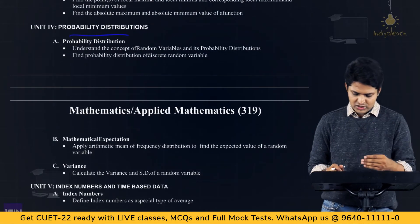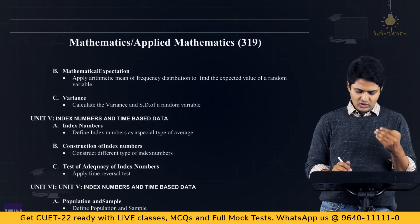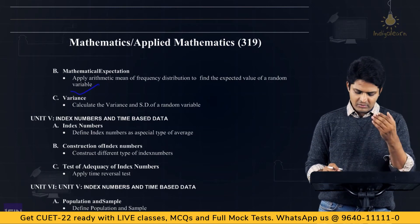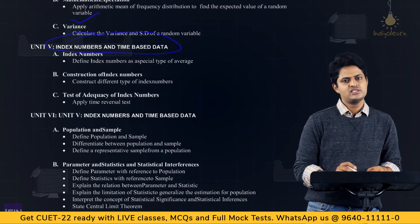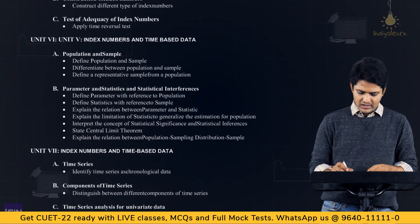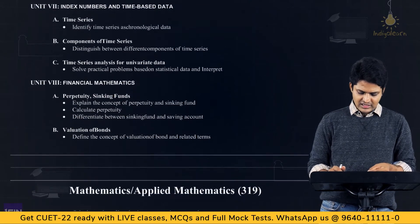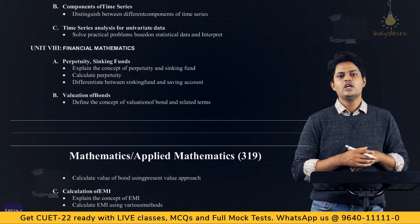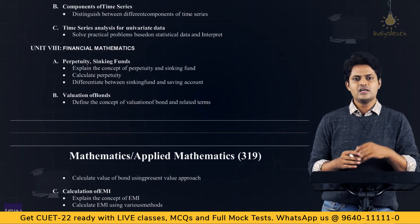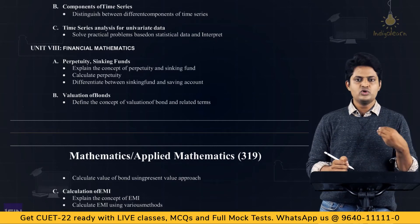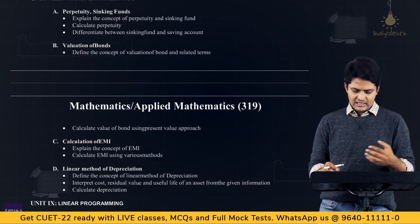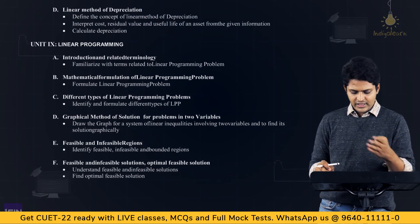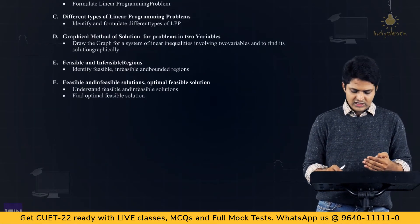Under probability distribution, topics include random variables, discrete random variables, mathematical expectation, variance, and standard deviation. There are also chapters on index numbers and time series data, and finally financial mathematics — important for graduation — covering EMI calculations, bond valuation, sinking funds, time value of money, and linear programming.